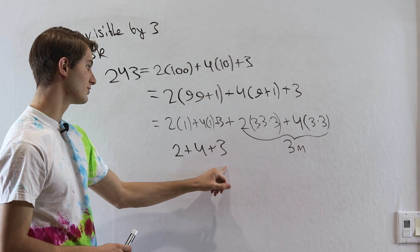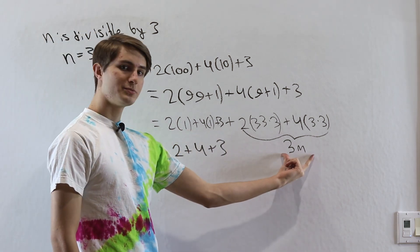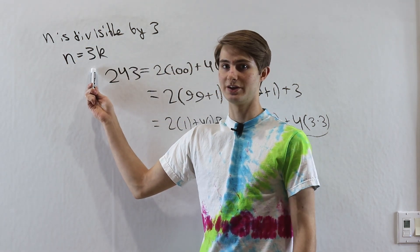And if this sum is divisible by 3, this part is a multiple of 3, we know this part is, and therefore we add them together, and we get something that is divisible by 3.